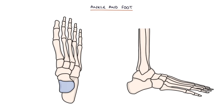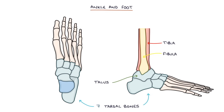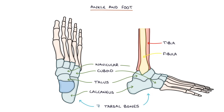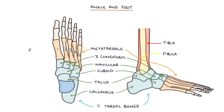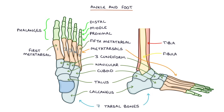Finally, let's move on to the ankle and the foot. At the ankle joint, the tibia and the fibula meet with the tarsal bones of the foot. There are seven tarsal bones: the talus, which joins directly with the tibia and the fibula at the ankle joint; the calcaneus; the cuboid; the navicular; and then three cuneiform bones. Distal to the tarsal bones are the metatarsals, numbered one to five, with the first metatarsal joining the big toe and the fifth metatarsal joining the little toe. Distal to the metatarsals are the phalanges — proximal, middle, and distal — except for the big toe, which only has a proximal and distal phalanx.